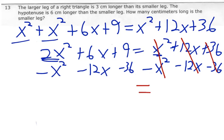So now we just need to simplify this. So 2x squared minus, that's really a 1x squared, is just 1x squared. 6x minus 12x gives us a negative 6x. And 9 minus 36 is negative 27. And that equals zero.